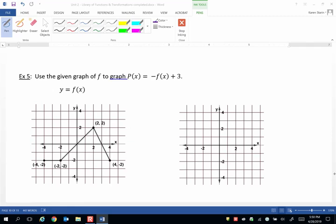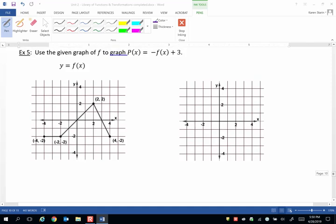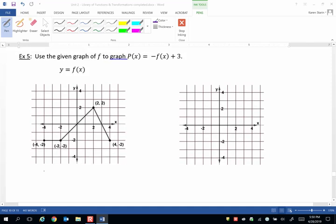Let me jot those down first under the graphs here. We're going to take this parent graph f(x) and we're going to do a vertical reflection over the x-axis, or about the x-axis. And then we're going to vertically shift up 3 units.